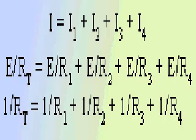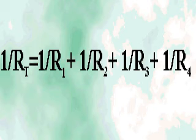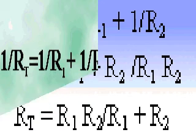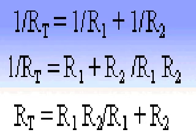By factoring E, we get 1 divided by RT equals 1 divided by R1 plus 1 divided by R2 plus 1 divided by R3 plus 1 divided by R4. This equation can be extended for any number of resistors in parallel. For two resistors in parallel, the equation simplifies as follows: 1 divided by RT equals 1 divided by R1 plus 1 divided by R2, which gives 1 divided by RT equals R1 plus R2 divided by R1 times R2, simplifying to RT equals R1 times R2 divided by R1 plus R2.